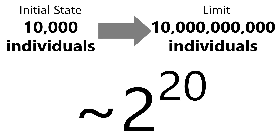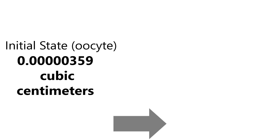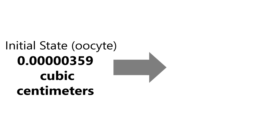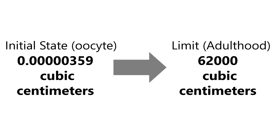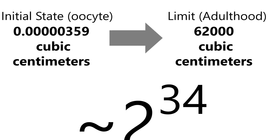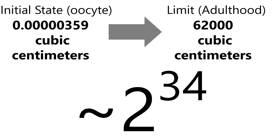Let's say we want to find the number of doublings for the volume of a human. The smallest point is when he or she was an immature egg, and the limit would be the volume of this human when he or she became an adult. We find out that the number of doublings for the volume of this human is around 34 doublings.